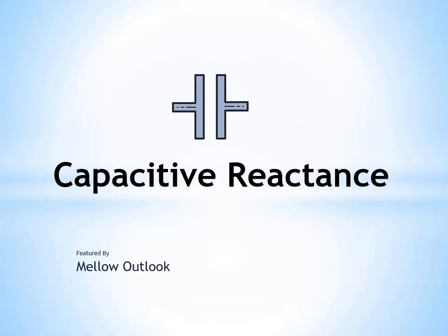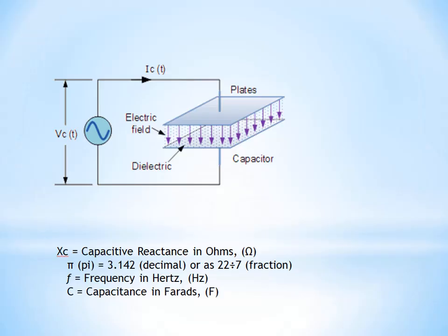Capacitive reactance. This circuit explains the working of a capacitor when voltage is applied across it. The capacitor is represented by parallel plates with a dielectric field in between.